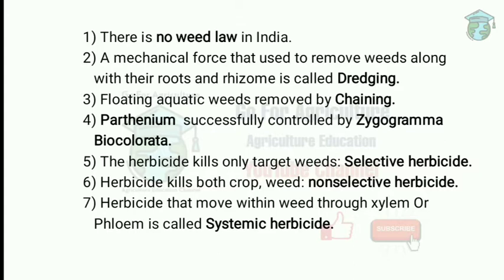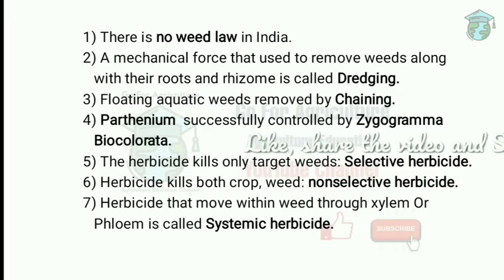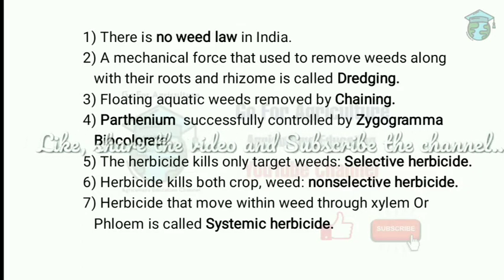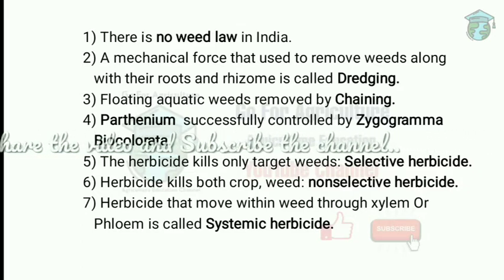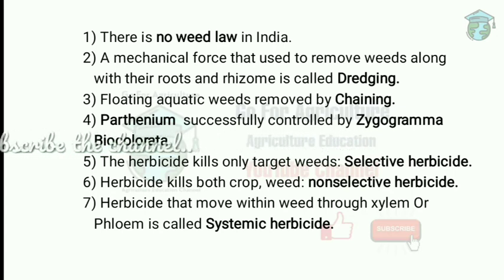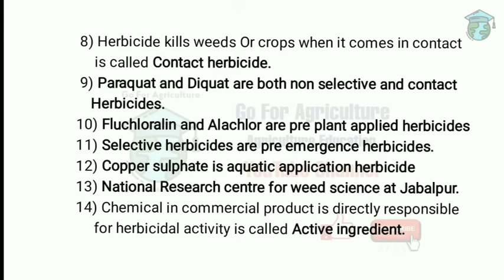A herbicide that moves within the weed through xylem or phloem is called a systemic herbicide. Systemic herbicides affect the whole system, including photosynthesis and respiration. Examples include 2,4-D, atrazine, and simazine.